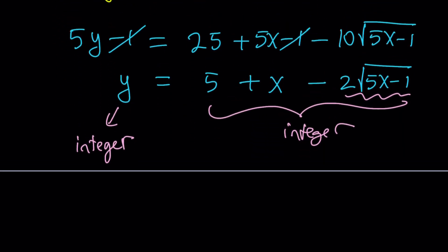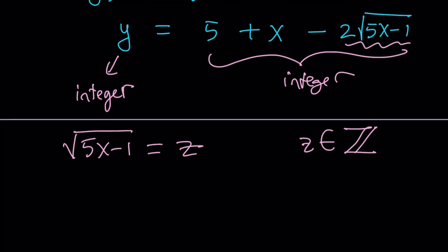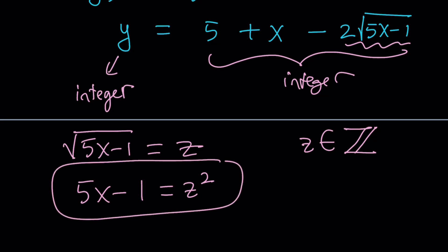So what do we get from here? Since the square root of 5x minus 1 is an integer, let's go ahead and set it equal to z. Suppose z, and z is an element of the set of integers. I don't know why they use Z for set of integers. There is probably an explanation. Maybe it's French. Just let me know if you do. So we're going to square both sides and we're going to get 5x minus 1 equals z squared. Anytime we see a radical, we're going to square it.